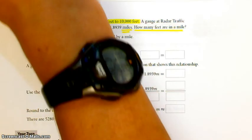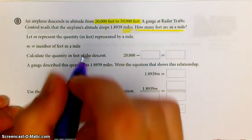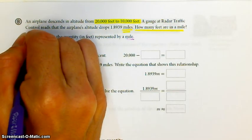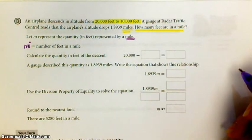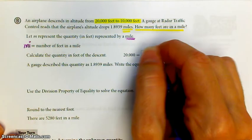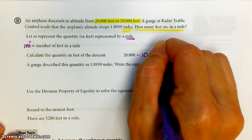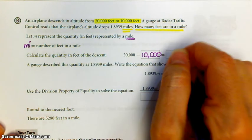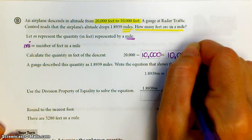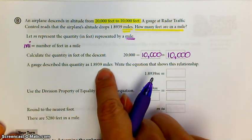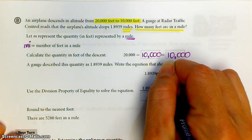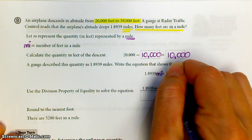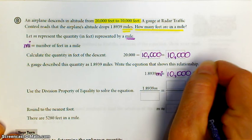Let M represent the quantity in feet represented by a mile. I'm going to make one little change just because I'm a science person. In science, when we mean miles, we typically say MI because in science, a plain old M usually stands for meter. So I'm going to make that one change. Calculate the quantity in feet. Well, that's 20,000 minus 10,000 feet. The change is 10,000 feet. The gauge says that that quantity is 1.8939 miles. So 1.8939 MI is equivalent to the 10,000 feet.